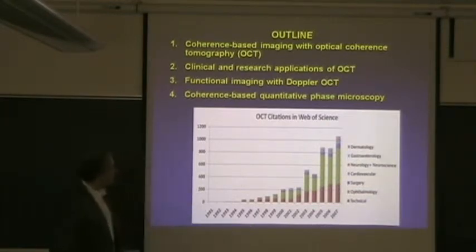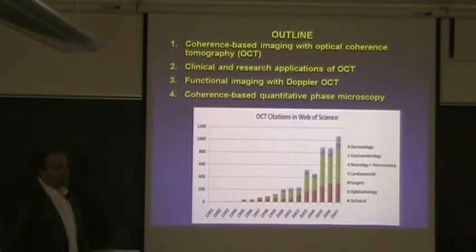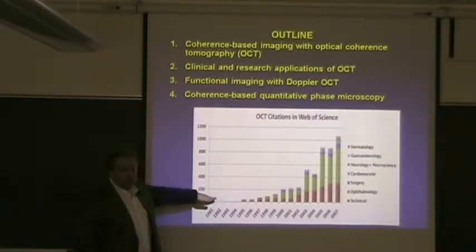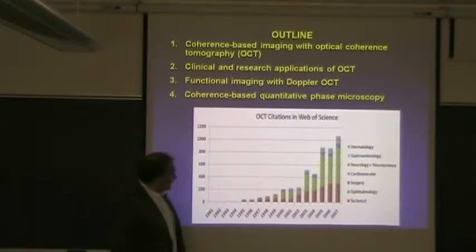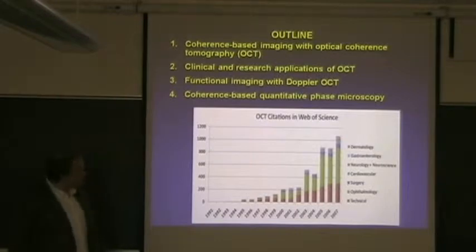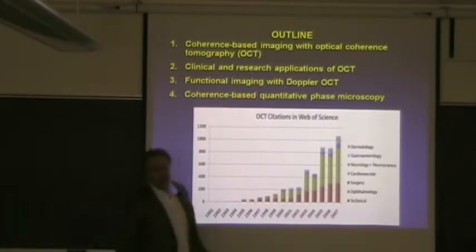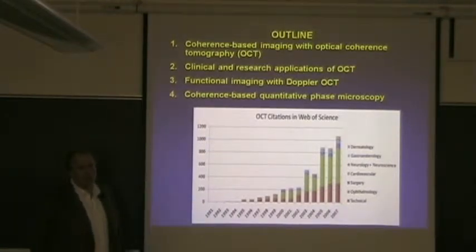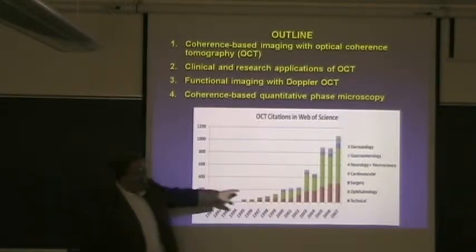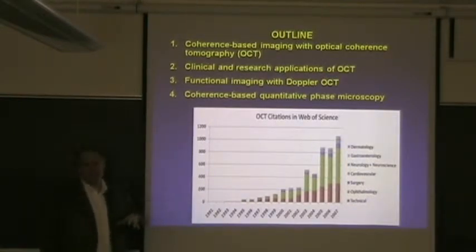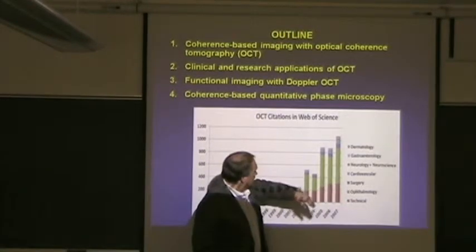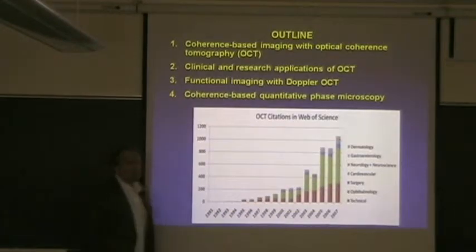This is a brief trace of citations of optical coherence tomography in the Web of Science up through a year and a half ago. It's been growing very rapidly since basically the first publication in 1991. Now there are on the order of a thousand publications a year that use this. Most of them — the green ones — are in ophthalmology. Since 1995, if you're an ophthalmologist, you've been able to buy an OCT imager and use it on your patients. There's also technology development and other clinical applications of this technology.